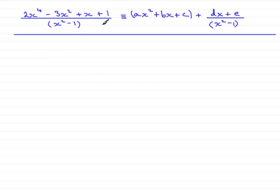Now in this question we are asked to write this fraction in this particular format. We have 2x to the power 4 minus 3x squared plus x plus 1 all divided by x squared minus 1.